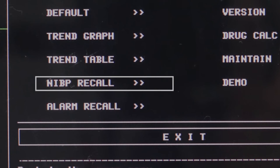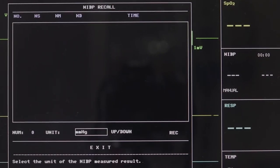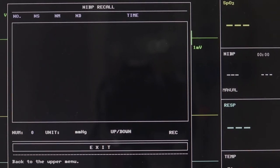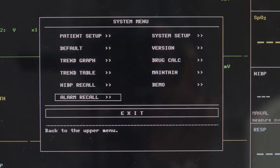NIBP Recall: This invokes the result and time of the latest 9 NIBP measurements. Data is listed chronologically from the latest to the earliest. Click on the exit to return to the system menu dialog box.